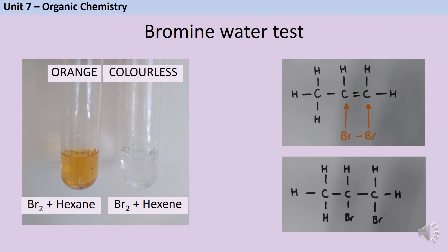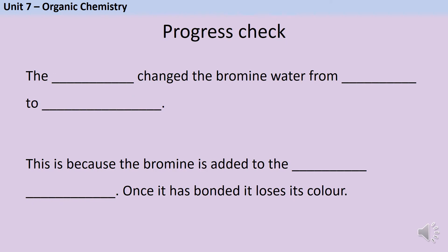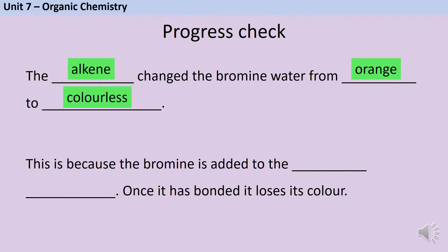It's absolutely vital that in describing this you say that the bromine water has gone colourless. You will not get the mark for saying it's gone clear — clear implies you can see through it, and you can already see through the transparent orange bromine water. You need to describe it as turning colourless. In this test it's the alkene that makes the bromine water change from orange to colourless, because the bromine has been added to the double bond and once bonded it loses its colour.